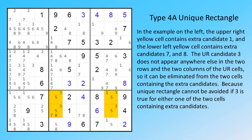In the example on the left, the upper right yellow cell contains extra candidate 1, and the lower left yellow cell contains extra candidates 7 and 8. The UR candidate 3 does not appear anywhere else in the two rows and the two columns of the UR cells, so it can be eliminated from the two cells containing the extra candidates. Because the unique rectangle cannot be avoided if 3 is true for either one of the two cells containing extra candidates.